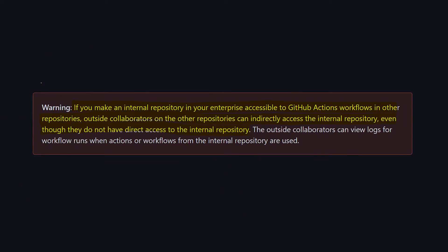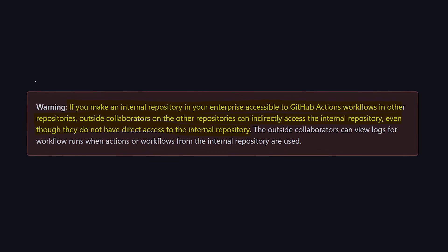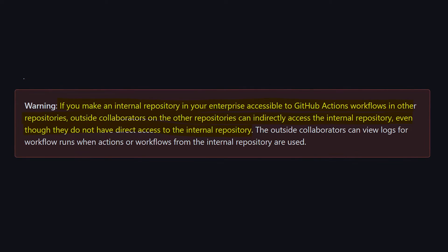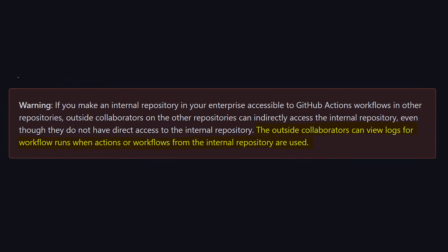There's a catch though on this being private. In the GitHub documentation, there's a curious warning that says that if you make an internal repository in your enterprise accessible to GitHub Action workflows in other repositories, outside collaborators on those other repositories can indirectly access the internal repository, even though they do not have direct access to it. They also mentioned that outside collaborators can view the logs when the actions are used. I would expect that to be the case — if I use an action, I want to be able to see the logs. But it's not clear if that is the only kind of access they have, or if outside accounts can access the internal repo in any other way beyond what they call indirect access. I've tried to use this feature and I don't seem to be able to access the internal repo with an account that doesn't have permissions, but I think it's worth an investigation.